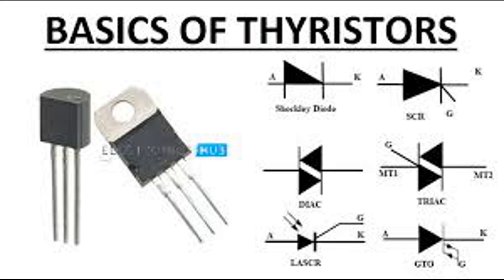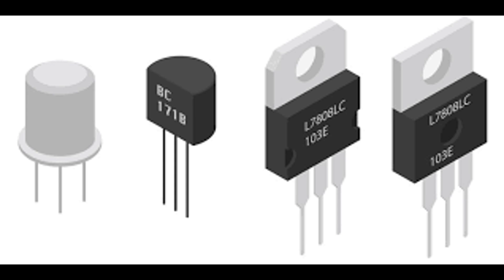High voltage and current handling: thyristors are capable of handling high voltages and currents, making them suitable for power control applications. By understanding these operating principles, it becomes clear how thyristors are used in applications requiring controlled power switching, such as motor speed control, light dimming, and rectification in power supplies.